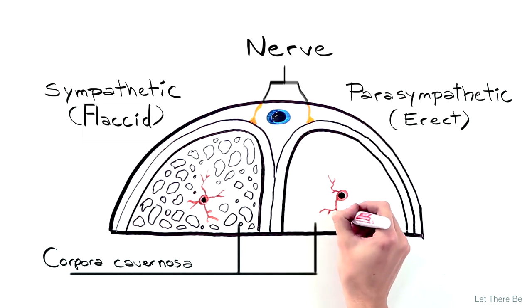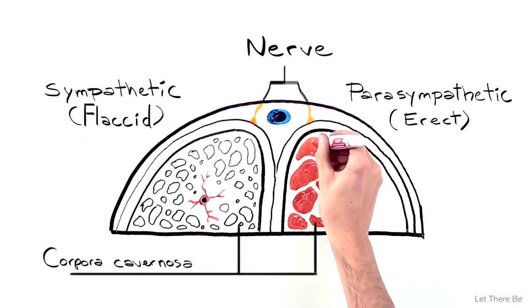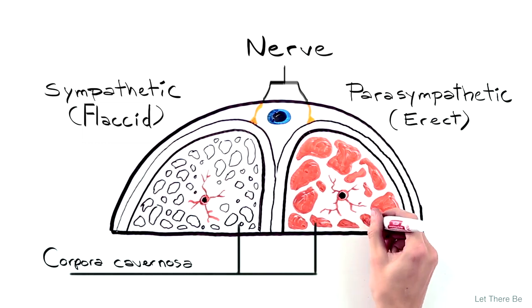Alternately, parasympathetic stimulation results in relaxation of erectile tissue, which allows the lacunar spaces to fill with blood, resulting in an erection.